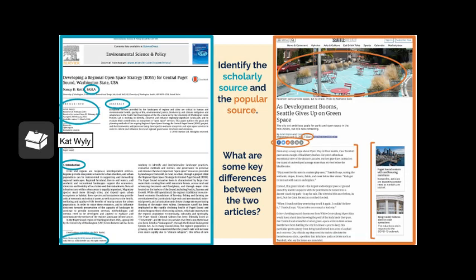You might have discovered that the Environmental Science and Policy article on the left is a scholarly source and the Seattle Weekly article on the right is a popular source. Starting at the top of the scholarly article, the author has an affiliation after her name — FASLA stands for Fellow of the American Society of Landscape Architects. There is a section dedicated to the article history, highlighting that it was revised before being accepted to the journal. An abstract, or summary of the article, is also included, and the paper uses headings such as 'Introduction.' There is also a DOI, or digital object identifier, at the bottom of the page, which helps identify academic literature.